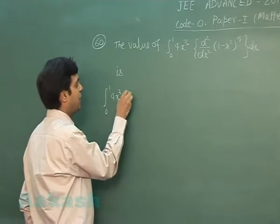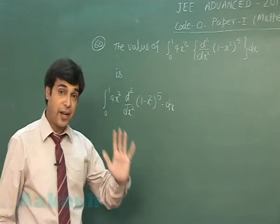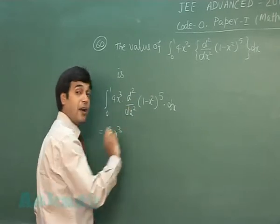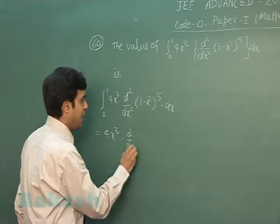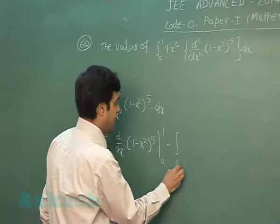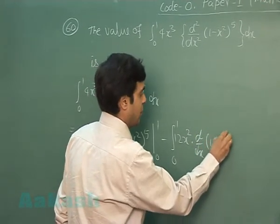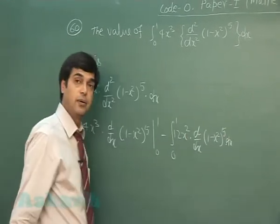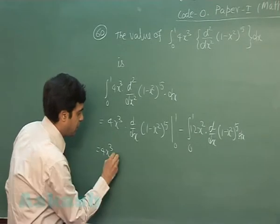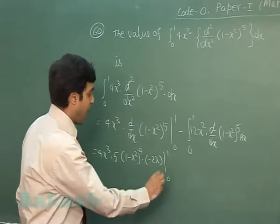Applying integration by parts to the integral from 0 to 1 of 4x³·d²/dx²[(1-x²)⁵] dx, we get 4x³ multiplied with d/dx[(1-x²)⁵] evaluated from 0 to 1, minus the integral from 0 to 1 of 12x²·d/dx[(1-x²)⁵] dx. Expanding, 4x³·5(1-x²)⁴·(-2x) with limit 0 to 1, minus 12 times the next integration by parts.